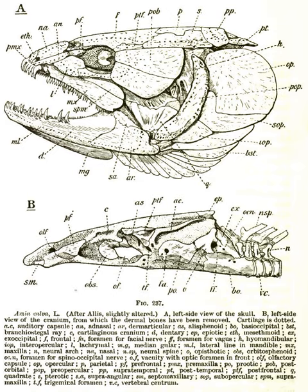It usually plays a role in suspending the jaws and/or operculum (teleostomy only). It is commonly suggested that in tetrapods — land animals — the hyomandibula evolved into the columella.